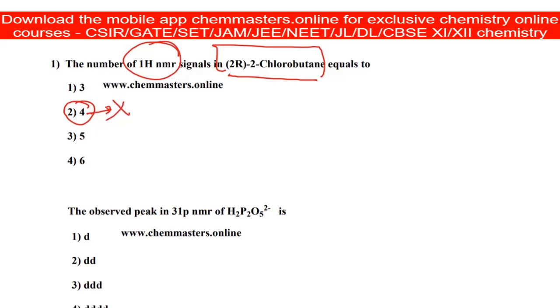First, we need to draw the correct structure of 2R-2-chlorobutane. I'm labeling the carbons one, two, three, four. At the second carbon we need to have chlorine.